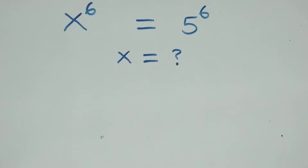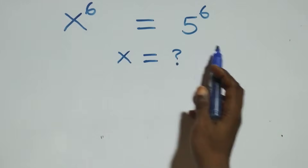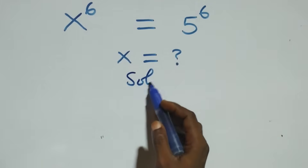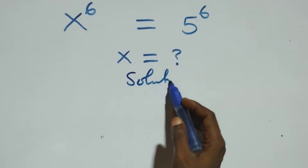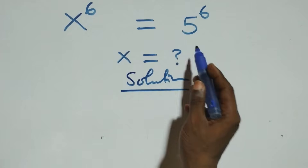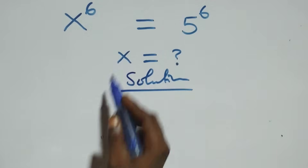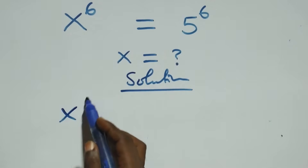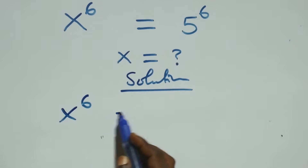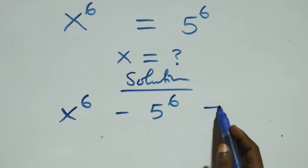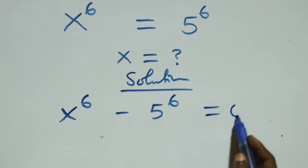Welcome to how to solve this nice exponential equation. From here we can take 5 raised to power 6 to the left hand side, and we have x raised to power 6 minus 5 raised to power 6 equals to 0.